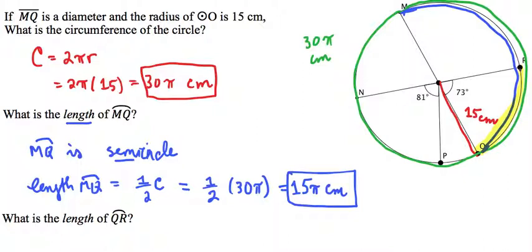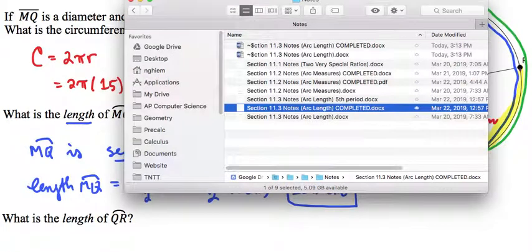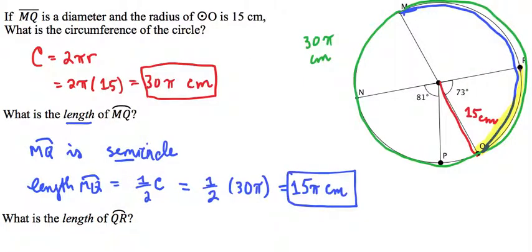But to answer this question, it is not too difficult. We just think about this a little bit in greater detail. QR has a measure of 73 degrees. So let's remind ourselves what all this means, that the measure of QR is 73 degrees. And the measure of the entire circle, the arc measure, the angular measure of the entire circle is 360 degrees.